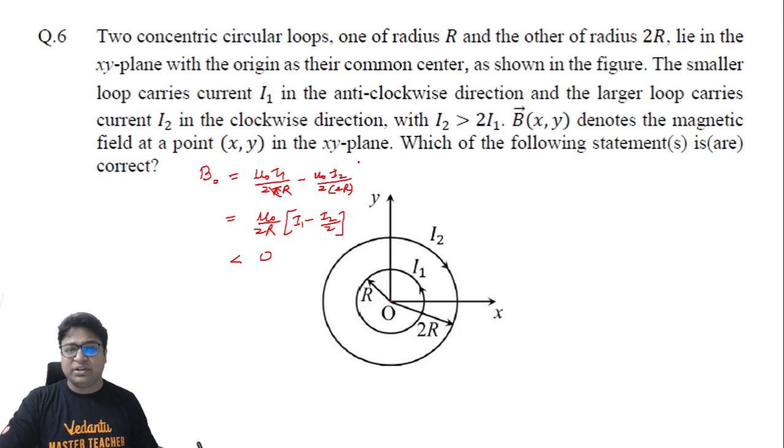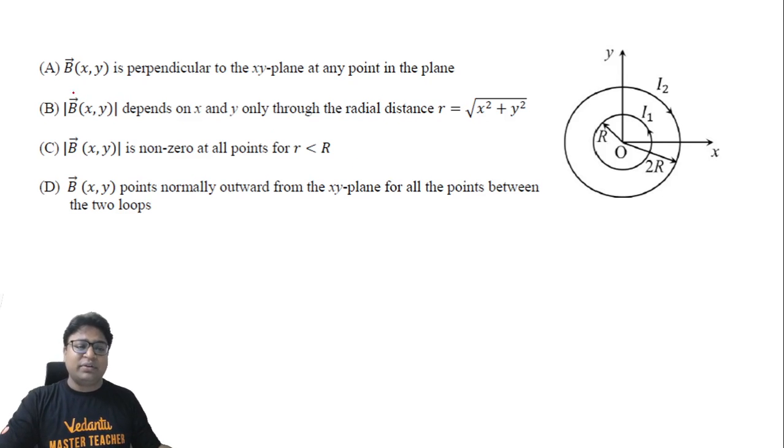Now to solve this question, let's see what the options say. Option A says that B is perpendicular to XY plane at all points in the plane. That seems correct because if a plane carries a circular current carrying loop, then in this plane field lines are either coming in or they are going out.